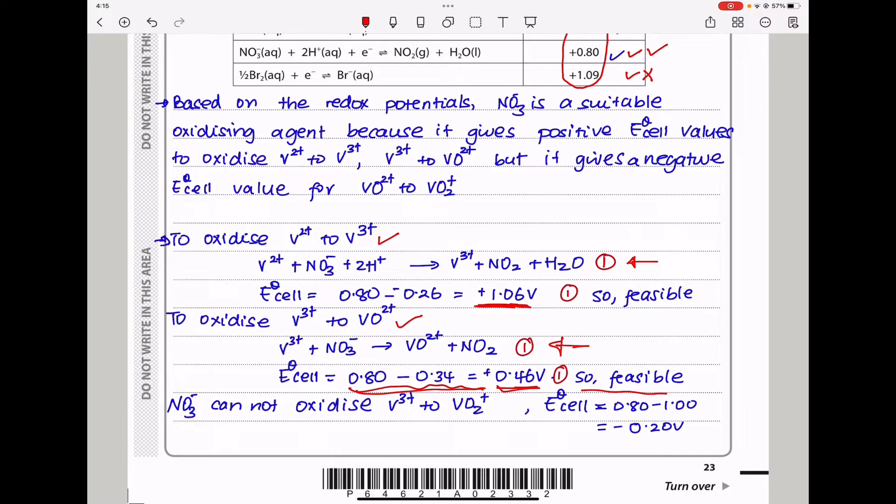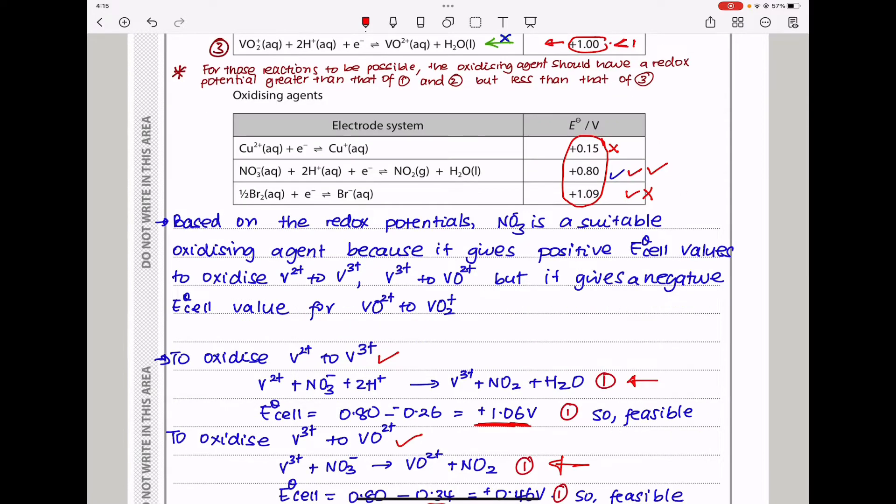To convert vanadium 3 to vanadium 4, this is going to be the equation for that reaction and the E cell value calculated is going to be positive 0.46 volts. And so, because this is positive, we can say that this reaction is also feasible. Now, NO3- cannot oxidize because when you calculate the E cell value, it comes out as negative 0.2 volts, so this should not be feasible. Therefore, NO3- should be a suitable reagent for the oxidation of vanadium 2 to 3, vanadium 3 to 4, but not vanadium 4 to 5.